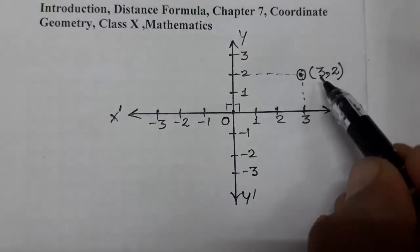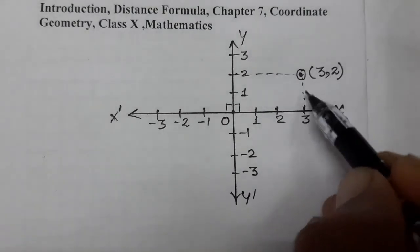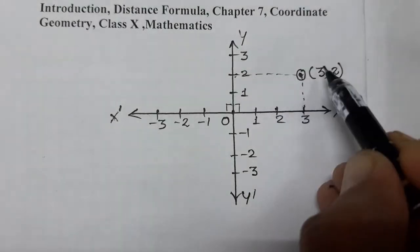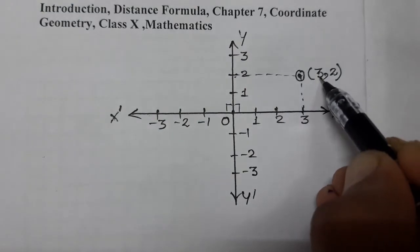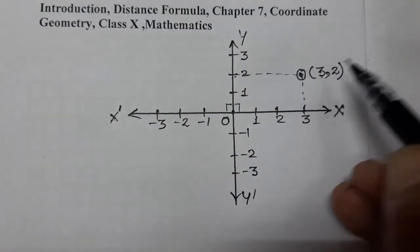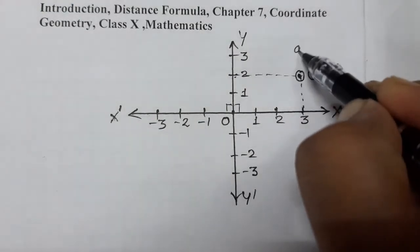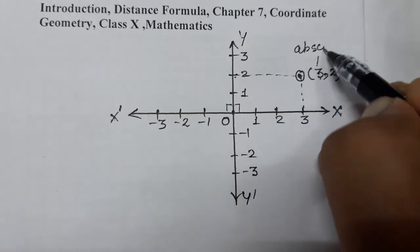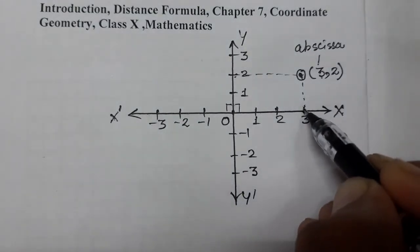The distance of a point from the Y-axis is called the X-coordinate, also known as the abscissa — spelled A-B-S-C-I-S-S-A. The distance of a point from the X-axis is called the Y-coordinate.